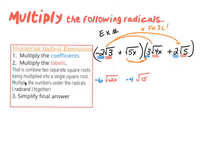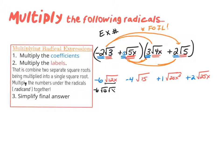For the inner terms: √5 times 3√(4x). The coefficients are 1 times 3 giving 3. The roots √5 and √(4x) join to give √(20x²) — since x times x is x². For the last terms: coefficients 1 times 2 give 2, and √(5x) times √5 join to give √(25x). Now we simplify: for −6√(12x), break into √4 times √3 times √x — that's 2√3 · √x — so −6 times 2 gives −12, and joining the two unsimplified roots gives −12√(3x).